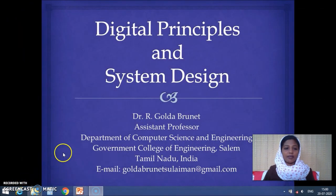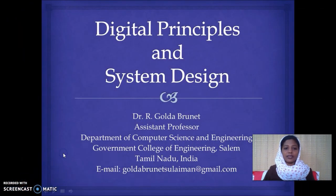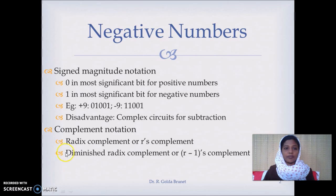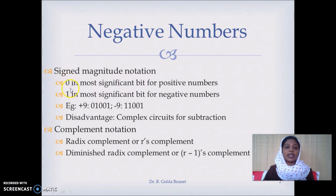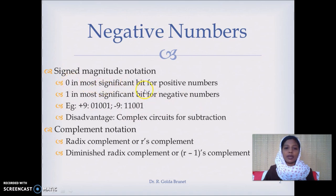Basically, we have three different representations. One is the sign magnitude notation, wherein we have a separate bit representing the sign. For example, 0 will represent positive numbers and 1 will represent a negative number, and the sign bit is available in the most significant bit.